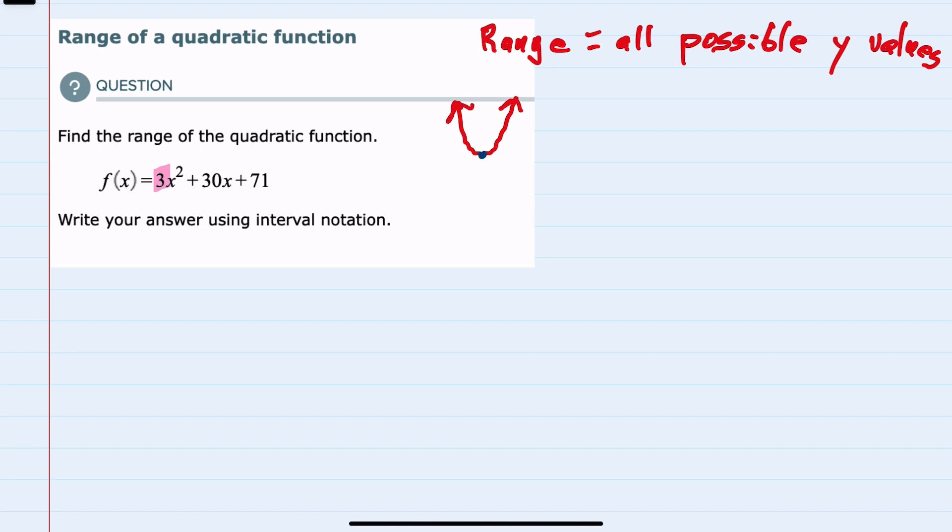If we find our vertex, that would give us the x and y value, and importantly, the y value that is the minimum value for this quadratic.